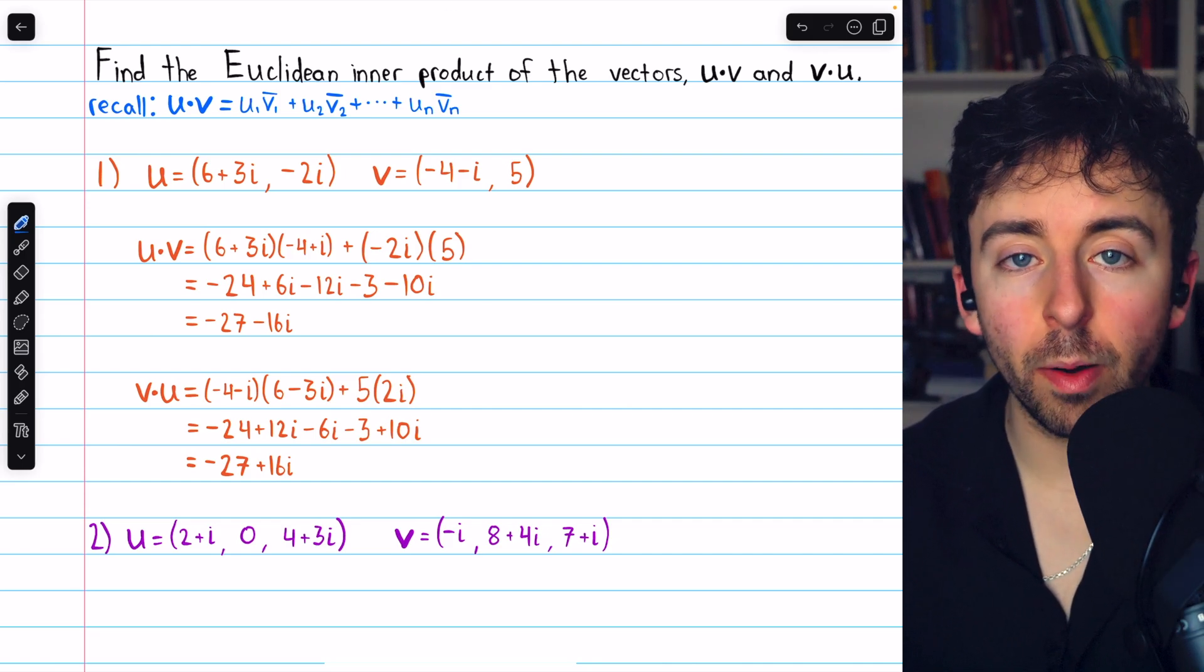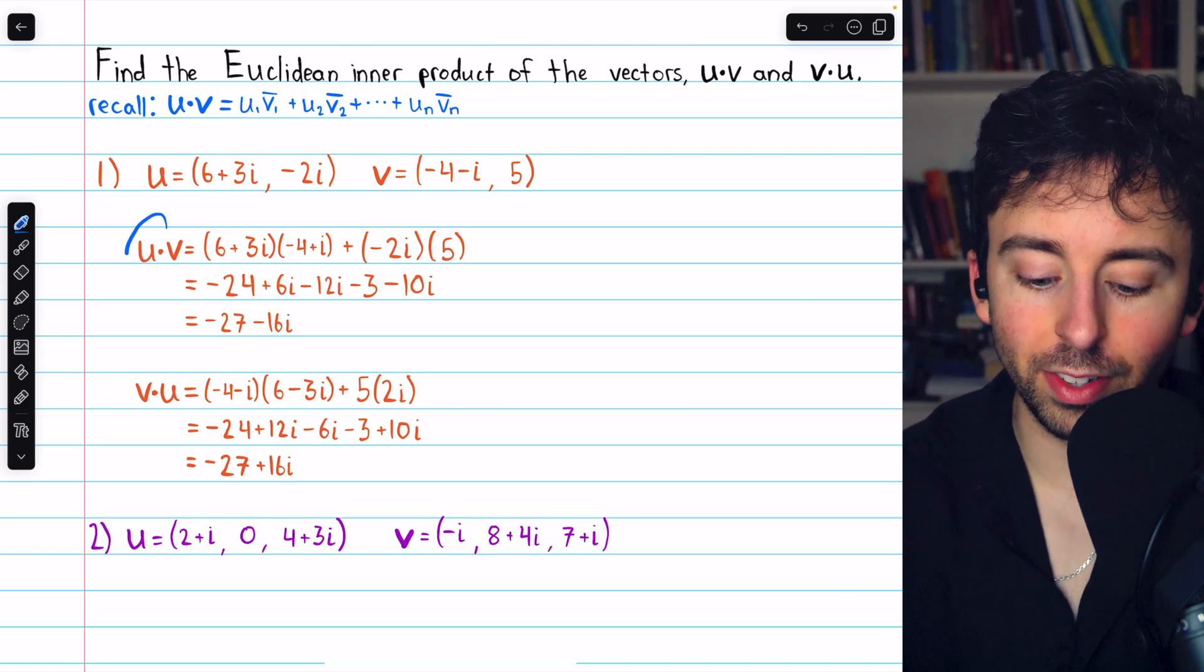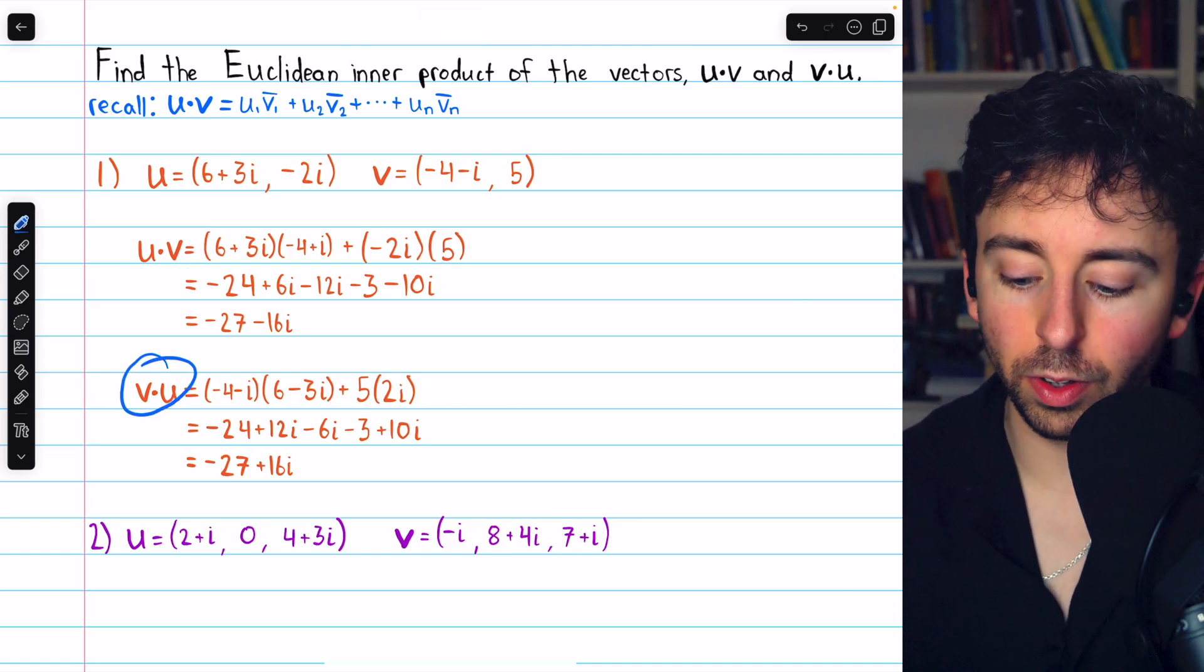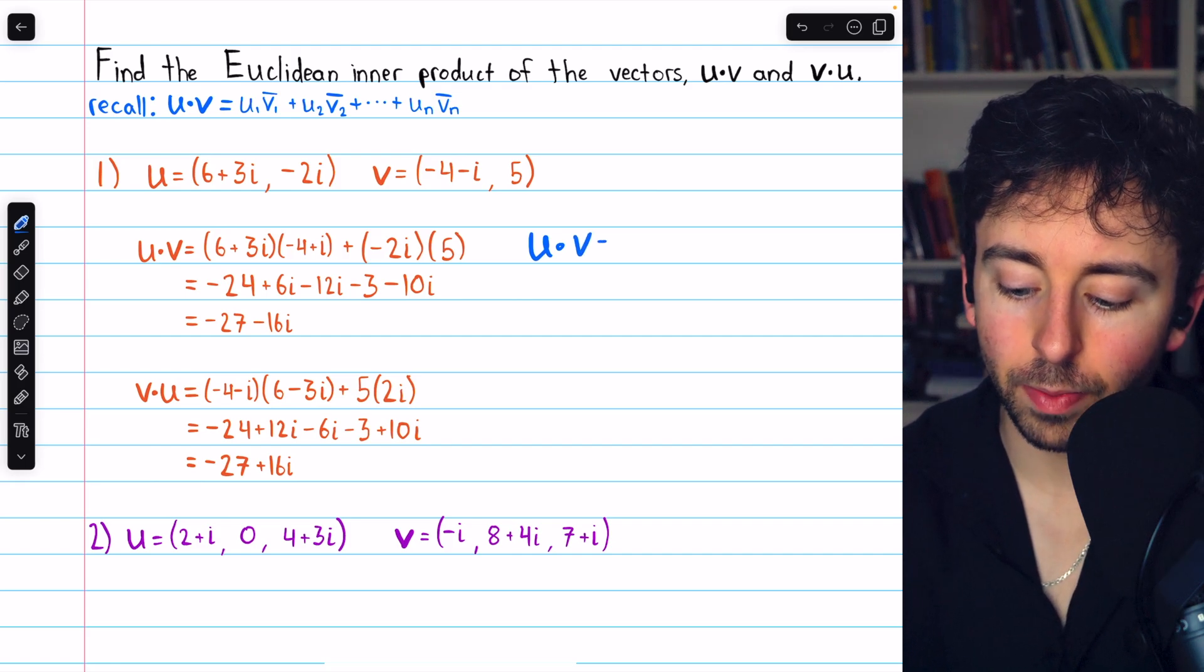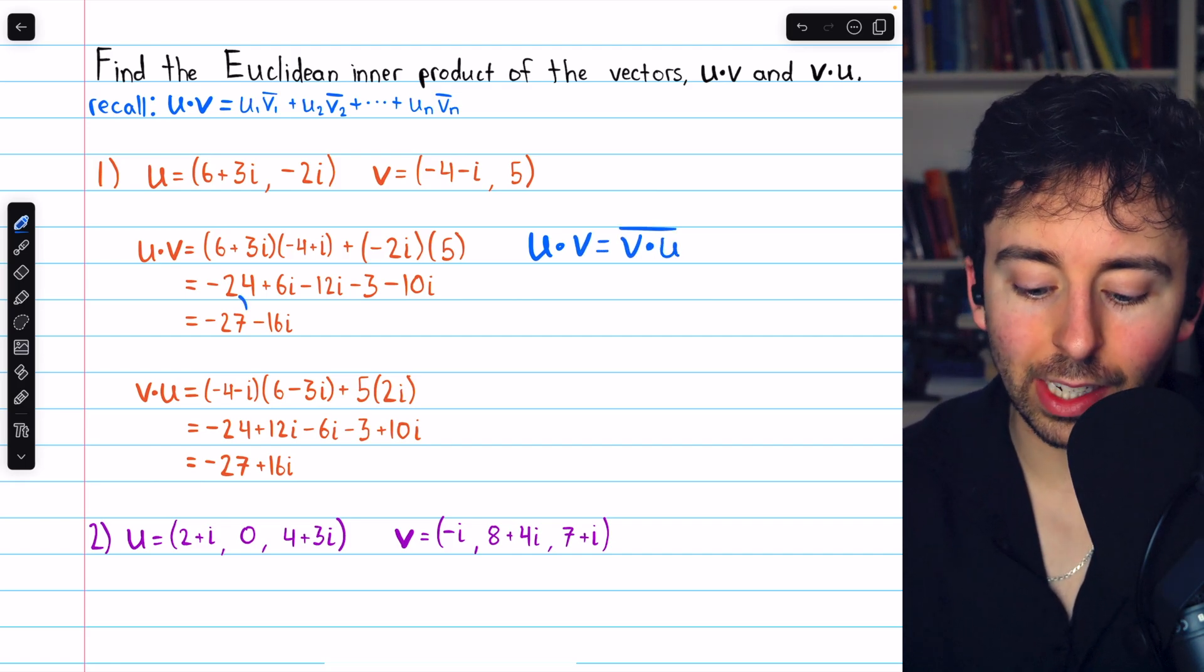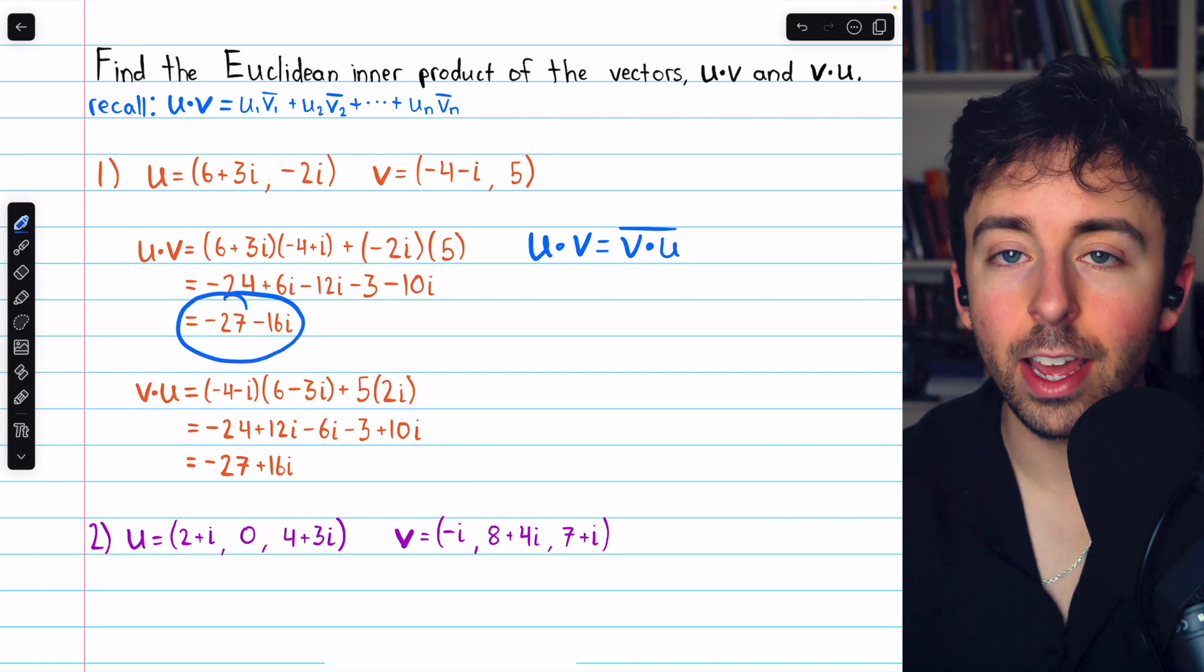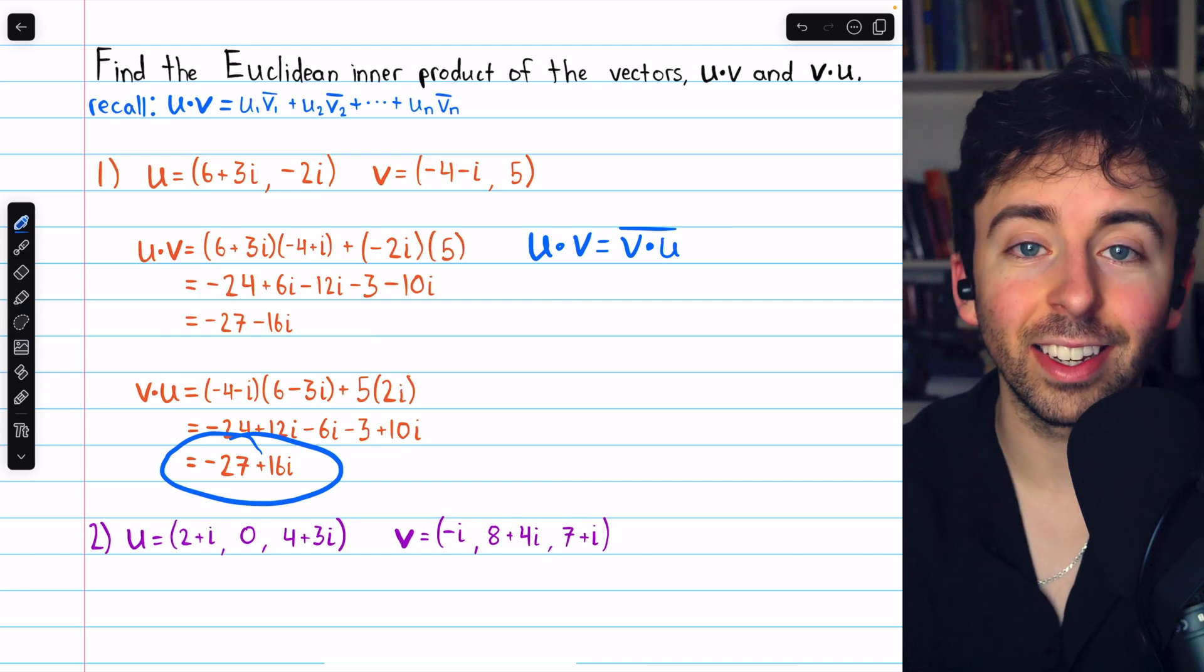You may recall that the complex dot product is not symmetric. The direction does matter. We see that u dot v is not equal to v dot u, but indeed it is the case that u dot v equals the conjugate of v dot u. We did have negative twenty-seven minus sixteen i, but once we switch the direction, we have negative twenty-seven plus sixteen i.